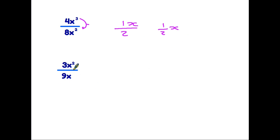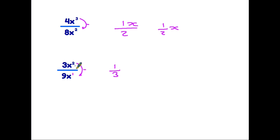The bottom example is similar, but we just need to remember the rules about indices. For the numbers: 3 over 9 simplifies down to one third. We then have x squared divided by x, and we have to remember that x on its own is the same as x to the power 1. Therefore it is 2 subtract 1, which equals 1, so we end up with just an x. Our answer is x over 3, or one third of x.